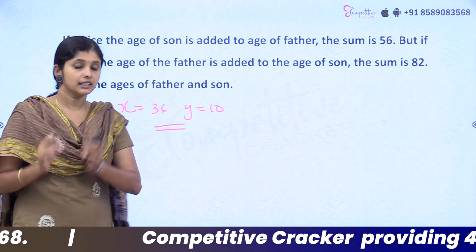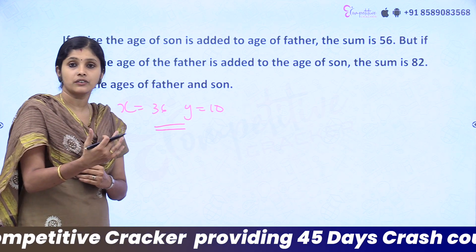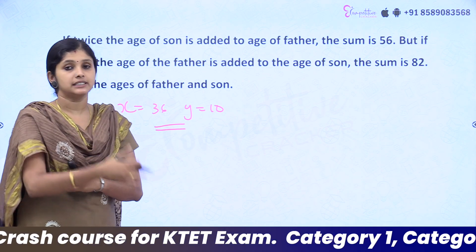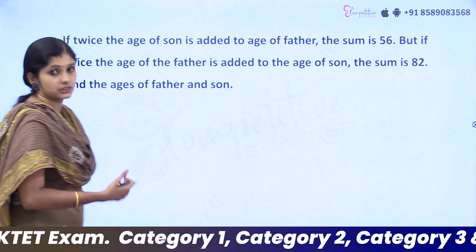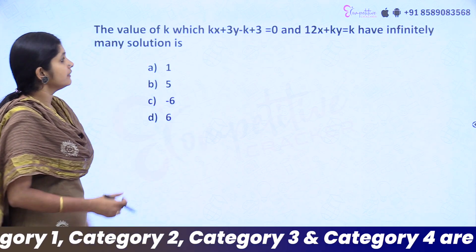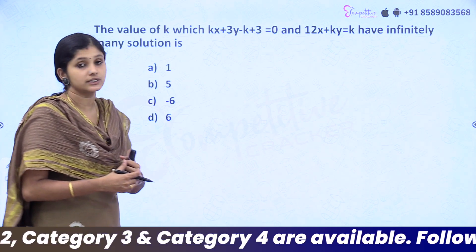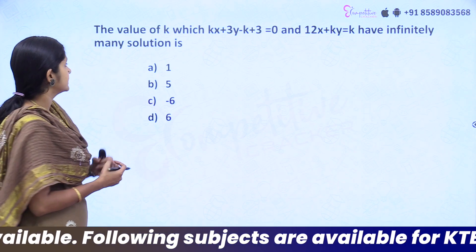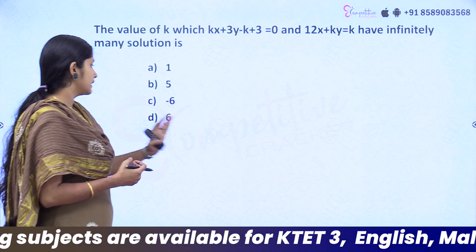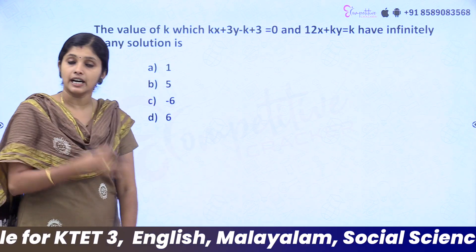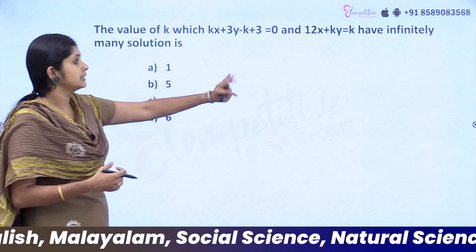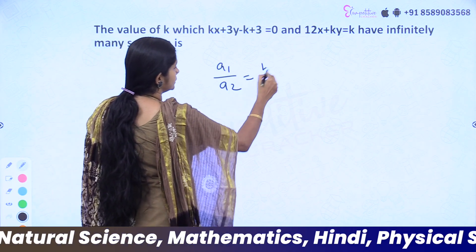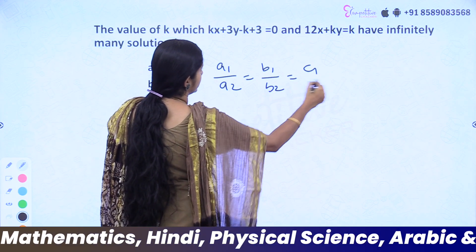This is one type of linear equation question solved using elimination. The next question: find the value of k for which kx plus 3y minus (k plus 3) equals 0 and 12x plus ky equals k have infinitely many solutions. Options: a) 1, b) 5, c) minus 6, d) 6. For infinitely many solutions, the condition is a1/a2 equals b1/b2 equals c1/c2.